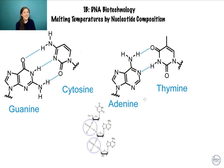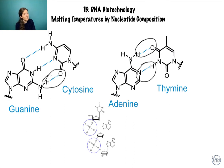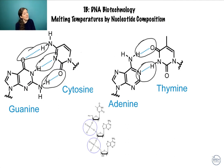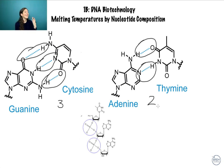We have a different number of hydrogen bonds depending on the base pairing. There are two hydrogen bonds between adenine and thymine, and three hydrogen bonds between guanine and cytosine. On the MCAT, you need to know these structures and be able to identify all five nucleotides, including uracil. So which pair has the stronger connection? Guanine and cytosine — the more intermolecular forces, the stronger the interaction.